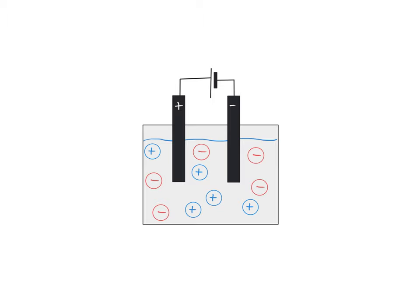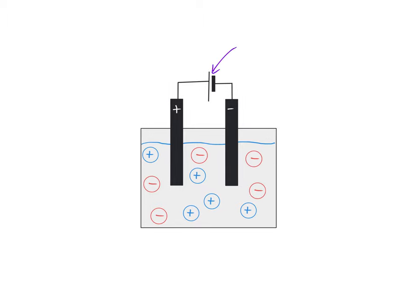I'm quickly going to label this diagram so that we know what we're actually looking at. We have a power supply — it could be a cell, an individual cell of a battery, or one of those big plug-in things you get at school — some sort of power supply to provide voltage. We've got wires connecting the power supply to two electrodes. The positive electrode is on the left and the negative electrode is on the right.